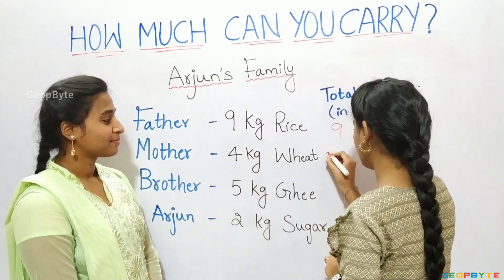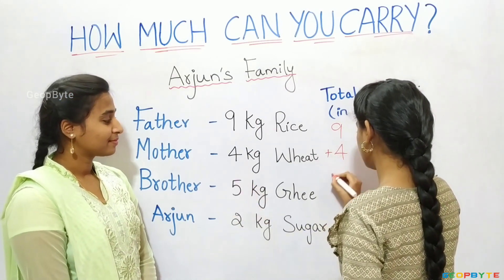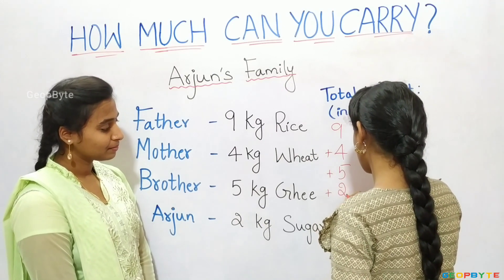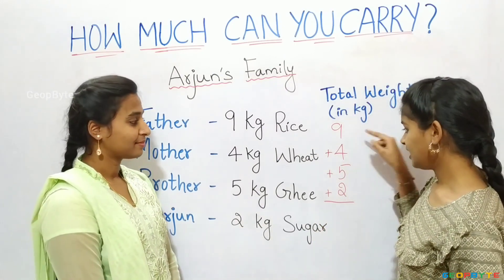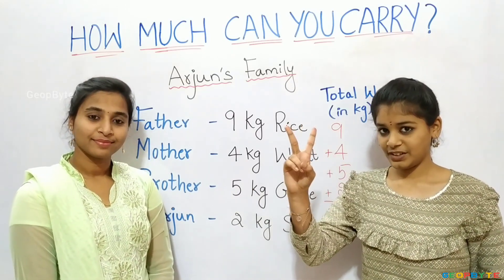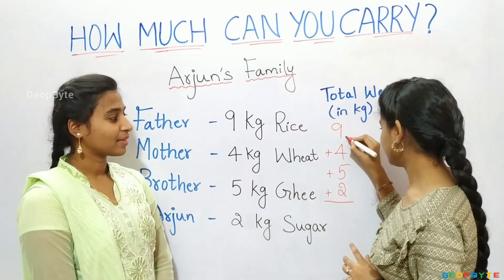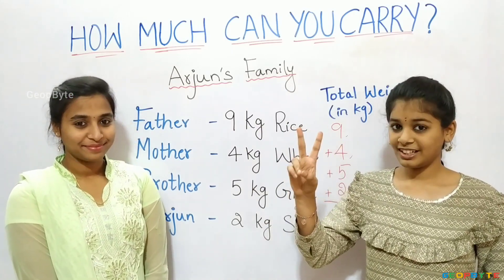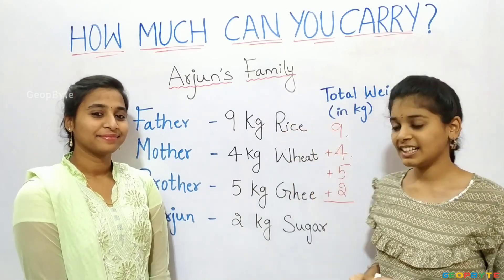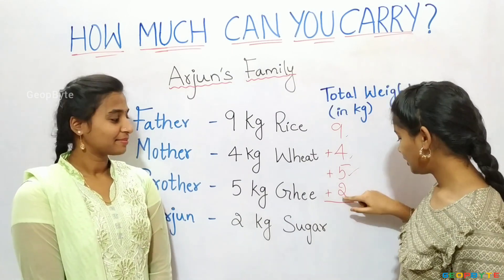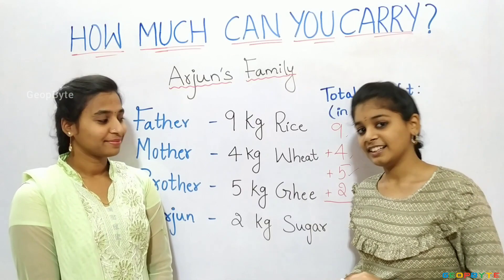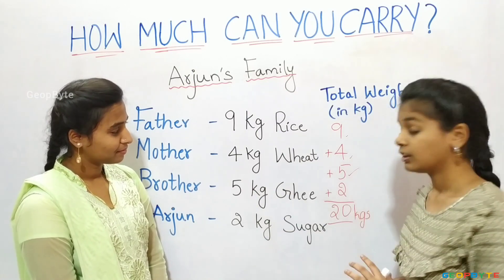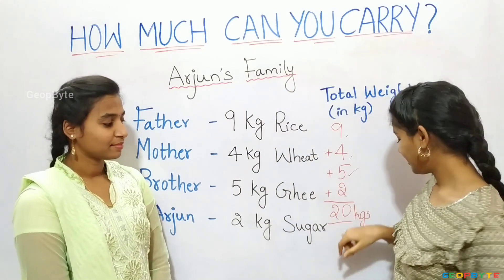9 plus 4 plus 5 plus 2. Let us add: 9 plus 4 equals 13. 13 plus 5 equals 18. 18 plus 2 equals 20. Let us write 20. The total weight of these items is 20 kgs.